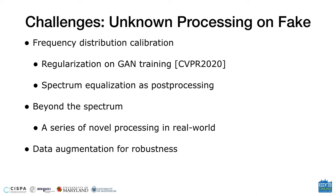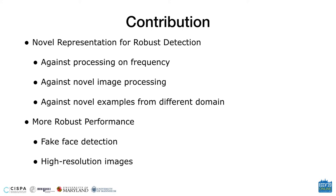In real-world scenarios, there are still many image processing techniques that can be used to alleviate the characteristic patterns from a generator, such as JPEG compression, low-pass filtering, and so on. Data augmentation is a kind of method to deal with image processing. However, there may still be potential unknown processing used.